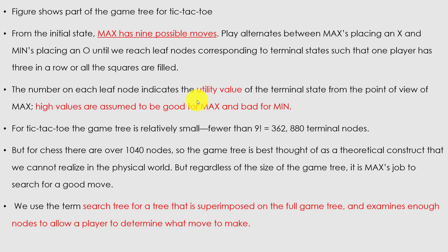The moves can vary from game to game. We use the term search tree for a tree superimposed on the full game tree that examines enough nodes to allow a player to determine what move to make. That was the end of today's session. The two concepts covered are adversarial search and games — including initial state, terminal state, actions, and utility values. If you have any doubts or questions, you can put them in the comments. Thank you.